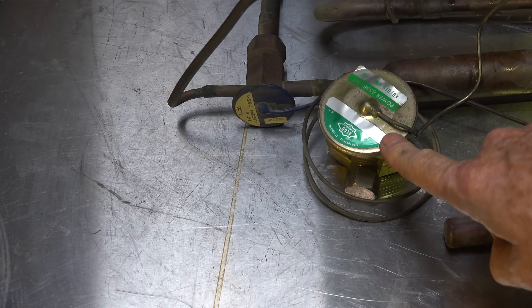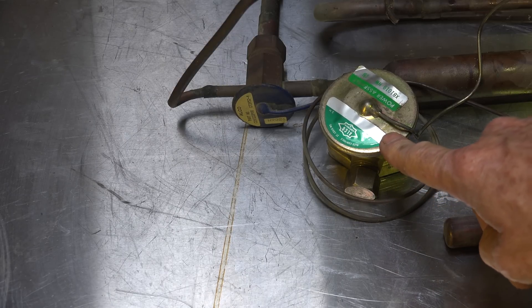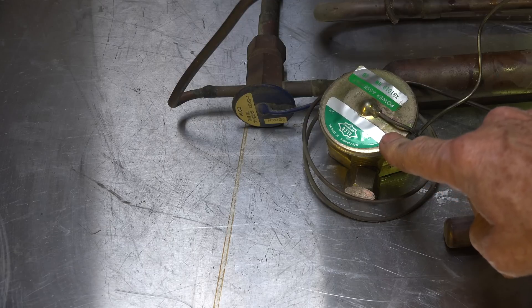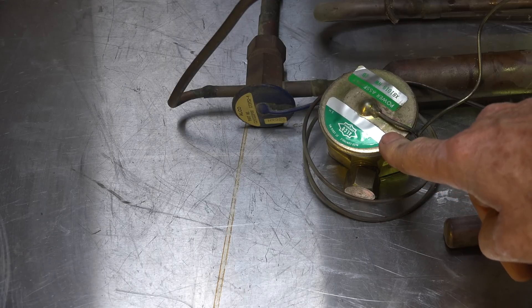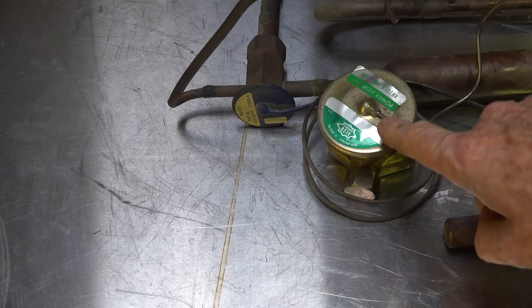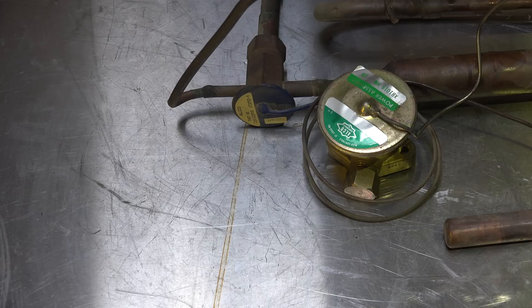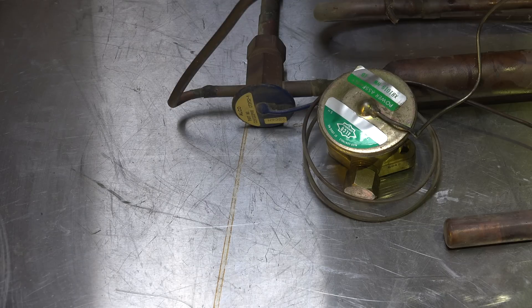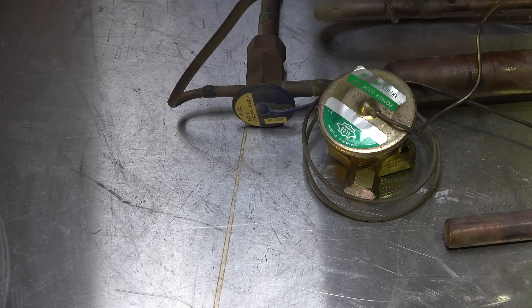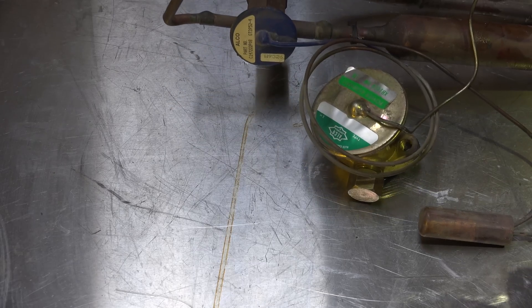Which one of these is going to be more sensitive to a small change in bulb pressure? Obviously, the answer is this one, because a larger diaphragm is going to have more movement for a small amount of pressure, just because there's more square inches there.